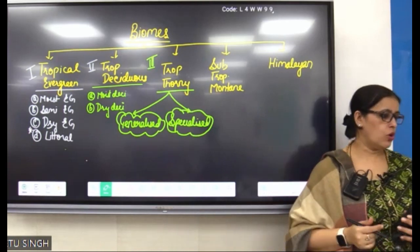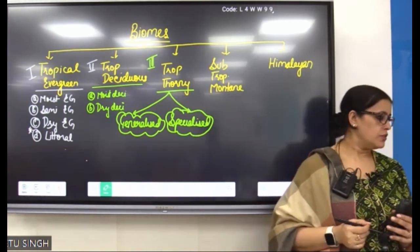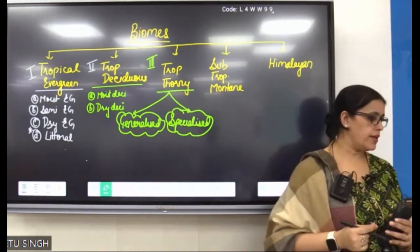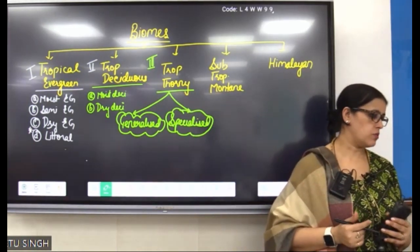Third biome: Tropical Thorny — with generalized thorny and specialized thorny subcategories.